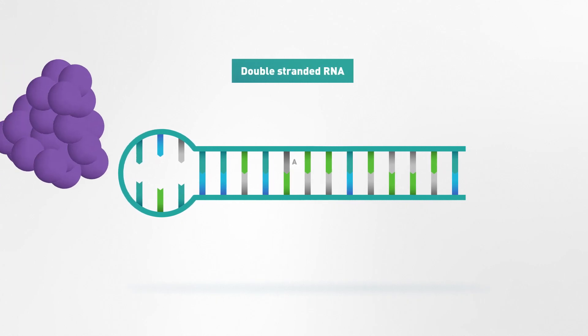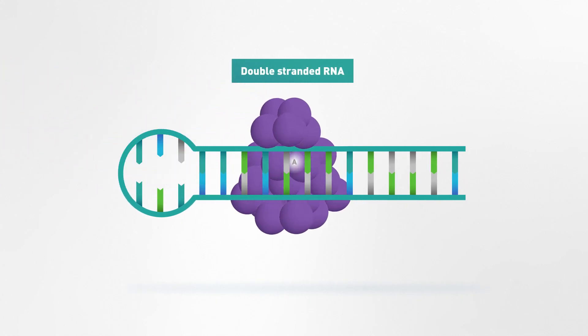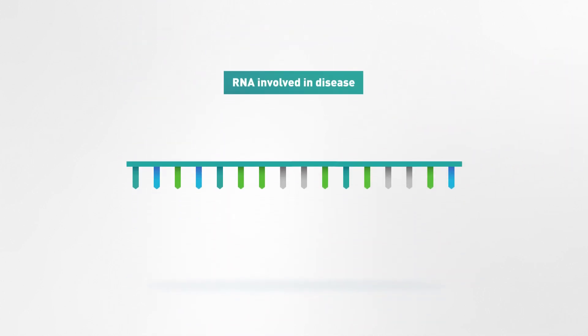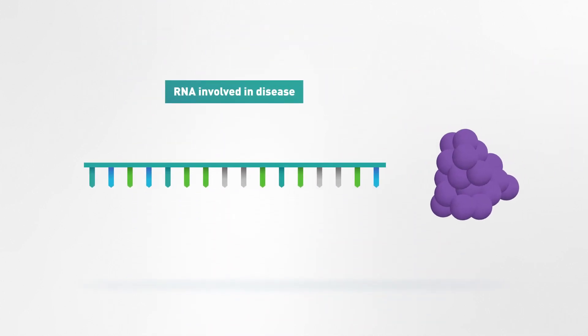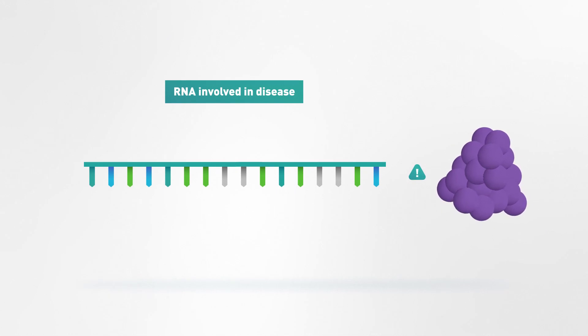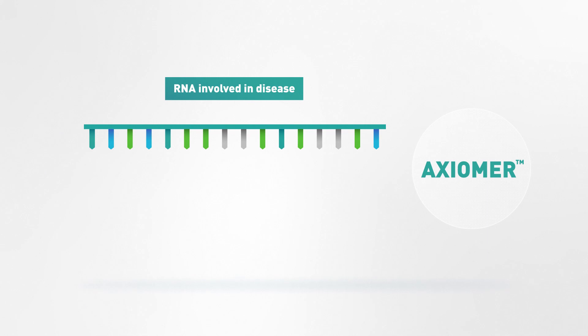ADAR enzymes perform A-to-I editing on double-stranded RNA. However, without such a duplex structure, ADAR cannot recognize the RNA sites involved in the disease. This is where Axiomer technology comes in.